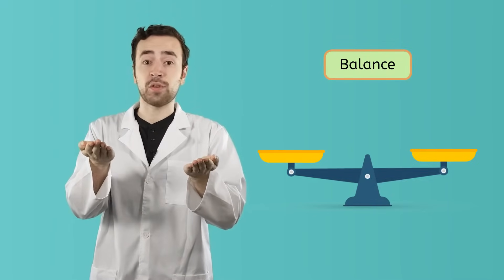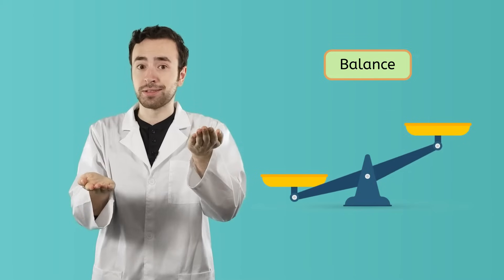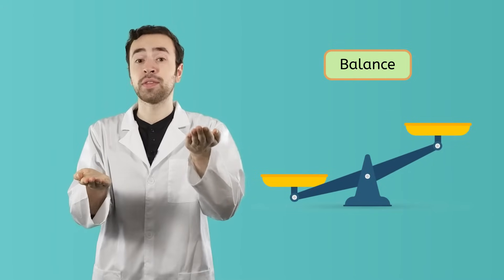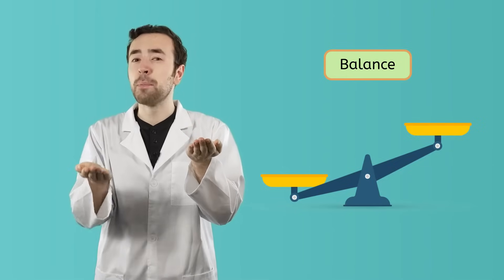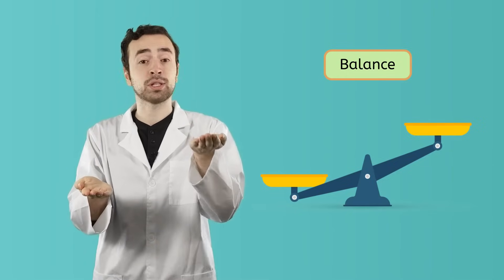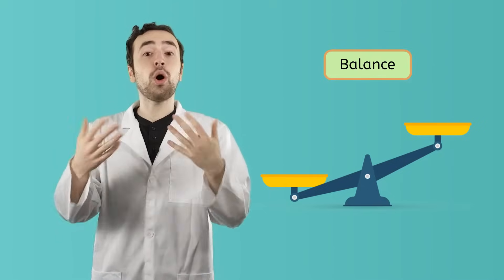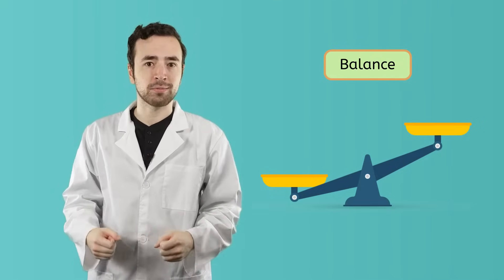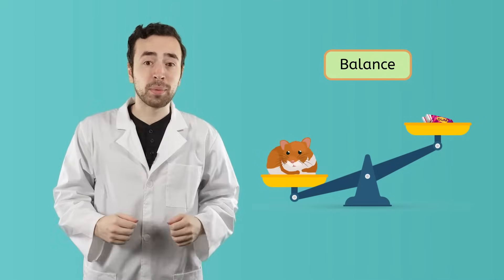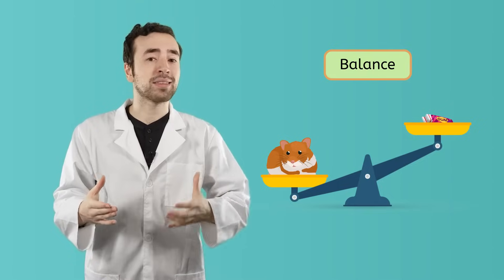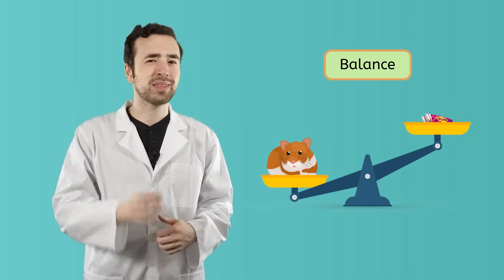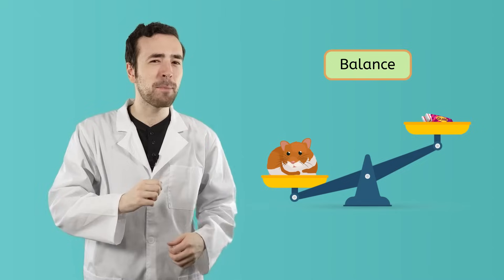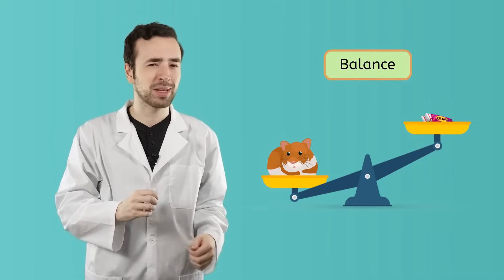However, if the sides of a balance are unbalanced, as in one is lower than the other, then we know that the object on the side that's lower must have more mass than the object on the other side. We've already seen examples of this. For example, you could probably tell that this hamster has more mass than this pack of gum, but that doesn't really tell us the mass of the hamster now, does it?